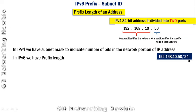In IPv6 we have a prefix length, and this prefix length gives us the number of bits being used in the network portion.